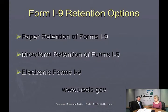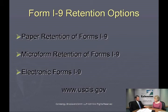The three retention options are paper retention, microfilm — though not many people do that anymore — or electronic forms retention. You're able to set these forms up electronically, and large employers a lot of times are setting these up as totally electronic documents. They're having employees come in and electronically sign their sections, having the employer section electronically signed, and storing them totally electronically. Or you can do paper, fill them out, scan them in, and save them electronically.